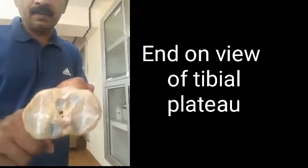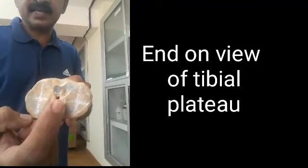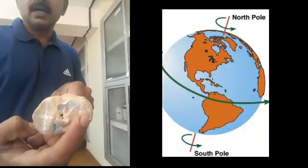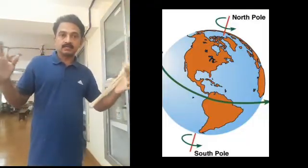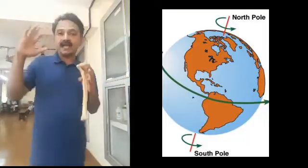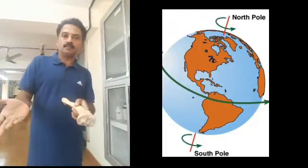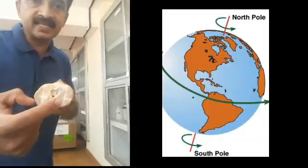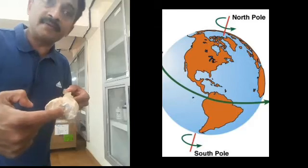This is an end-on view of your tibia. You have the middle point — this is where the ACL is attached. Here you have the medial side and here the lateral side. Just like the Earth has an imaginary axis around which it turns, the tibia or femur relatively has an imaginary axis passing exactly through the center.